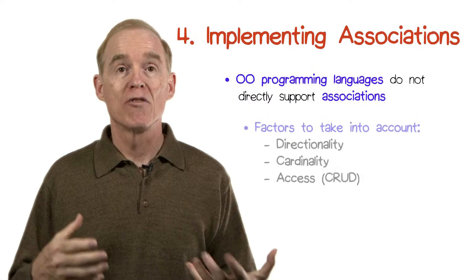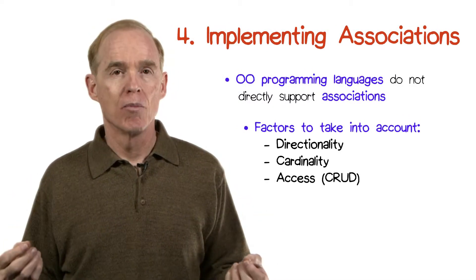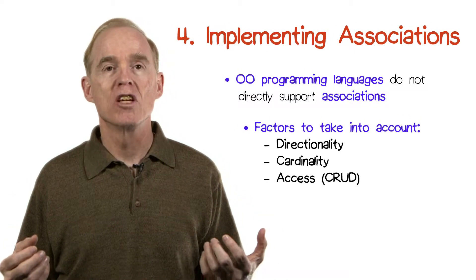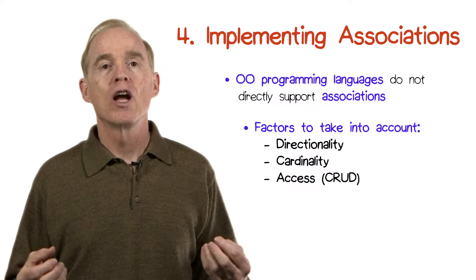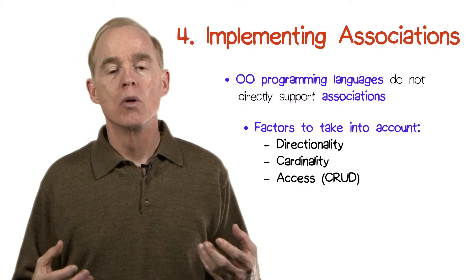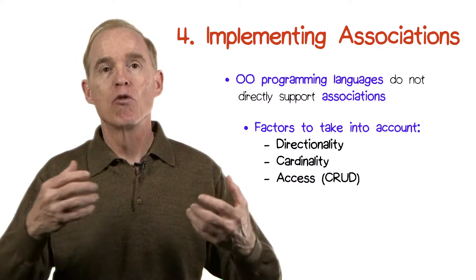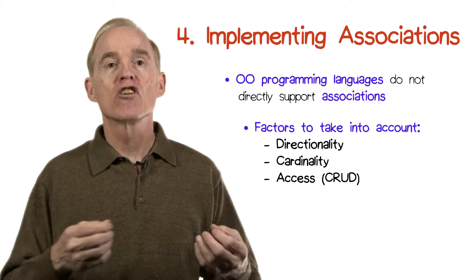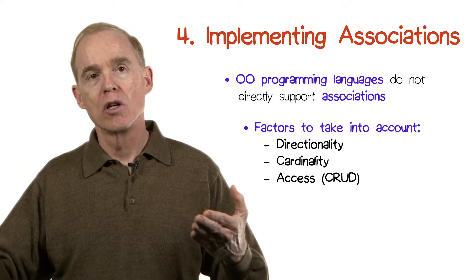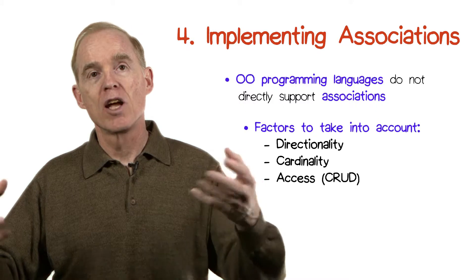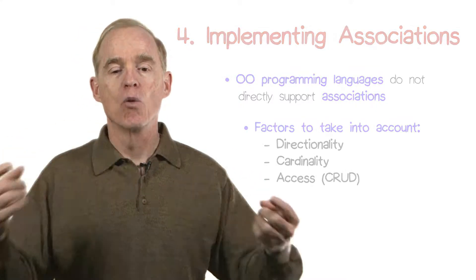Some of the factors you have to take into account: first off, is directionality. What this means is, if your program is going to need to interact with several classes, is the direction of that interaction always in one particular way — first A and then B — or might you go in either way?